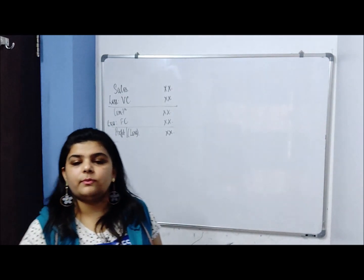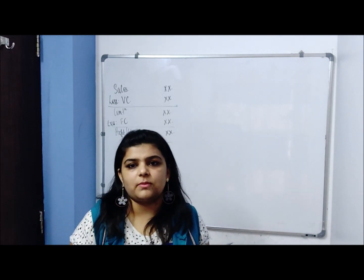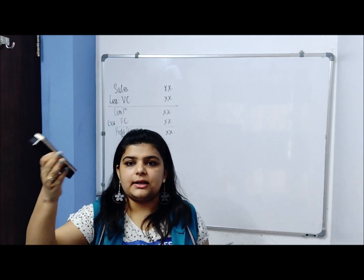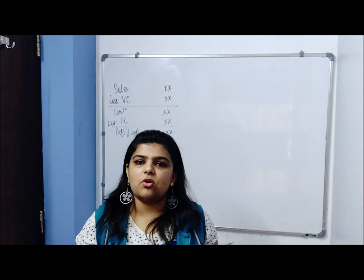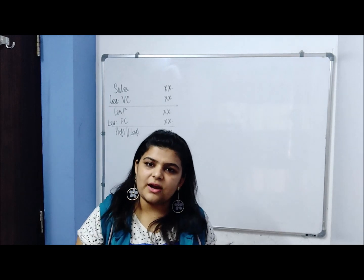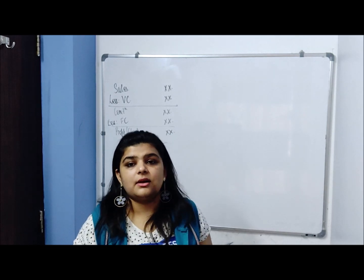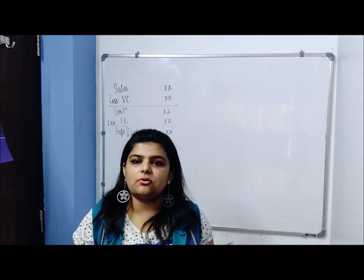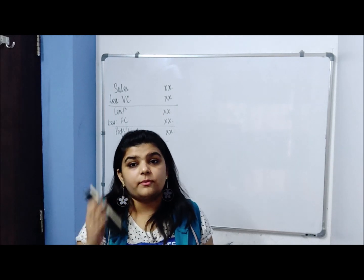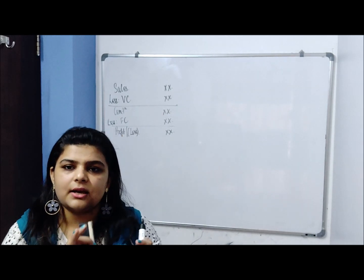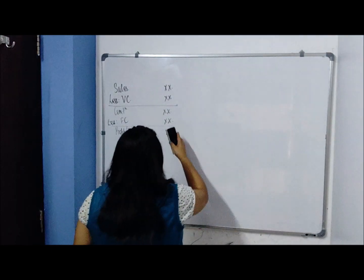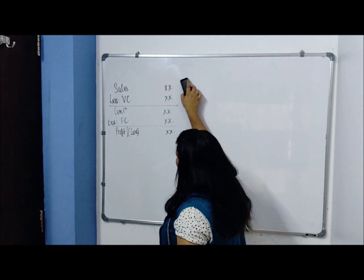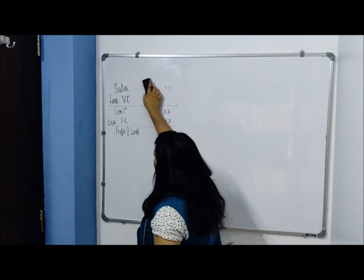Under absorption costing, which is what we learned in the normal cost sheet: direct material, direct labor, direct expenses give prime cost; add factory overheads to get gross factory cost; add opening WIP, less closing WIP — that is what we studied in the cost sheet. That is absorption costing. Now we are going to elaborate what happens under marginal costing.